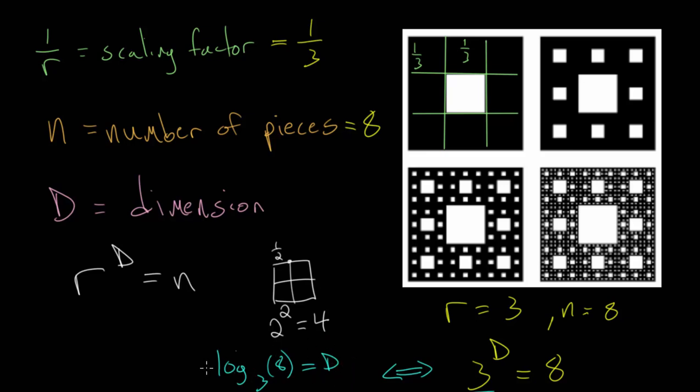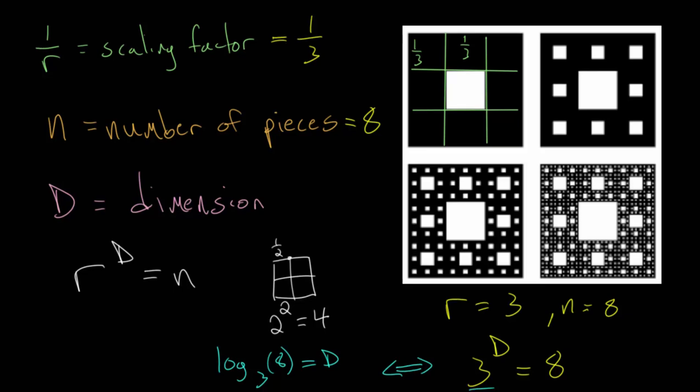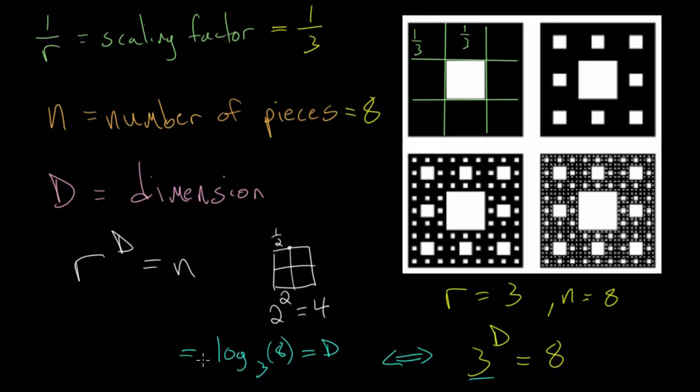Now, once we have this as a logarithm, we can rewrite it using the change of base rule, so that we can actually evaluate this with a calculator. Let me just make a little bit more room, and we can use base 10 or base e. And if we use logarithms with base 10, then we're using the common log, and we don't have to write 10, it's implied, which means we have log 8 over log 3. Or we can rewrite this with a natural log. With base e, we can do ln, the natural log of 8, divided by ln of 3, but in both cases, these are equivalent.